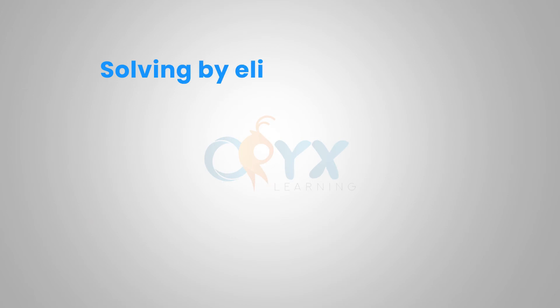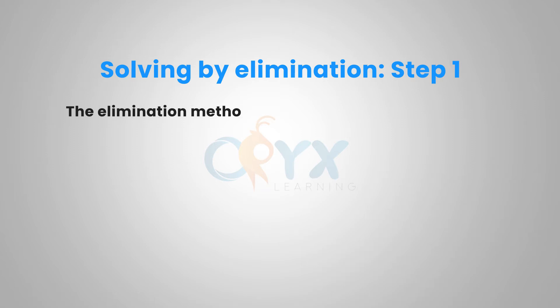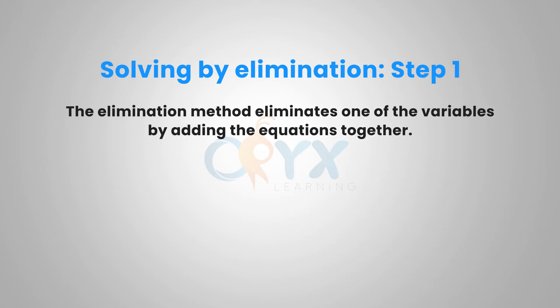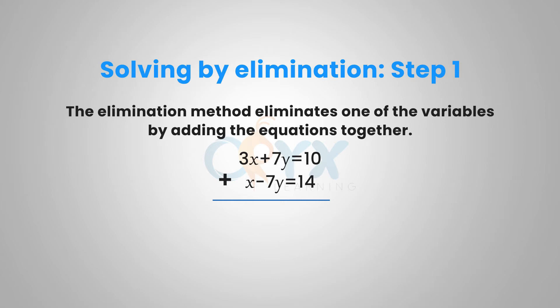The first step in solving a system using the elimination method: the elimination method eliminates one of the variables by adding the equations together. For example, if we have the system 3x + 7y = 10 and x − 7y = 14, adding these equations together gives us 7y − 7y = 0, essentially eliminating one of the variables. Now we're left with 4x + 0 = 24, or just 4x = 24.